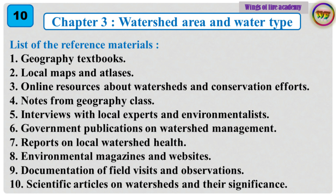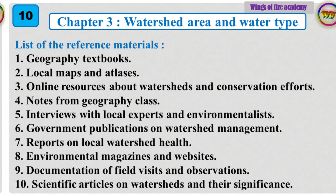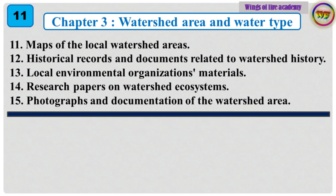8. Environmental magazines and websites. 9. Documentation of field visits and observations. 10. Scientific articles on watersheds and their significance. 11. Maps of the local watershed areas. 12. Historical records and documents related to watershed history. 13. Local environmental organizations' materials. 14. Research papers on watershed ecosystems. 15. Photographs and documentation of the watershed area.